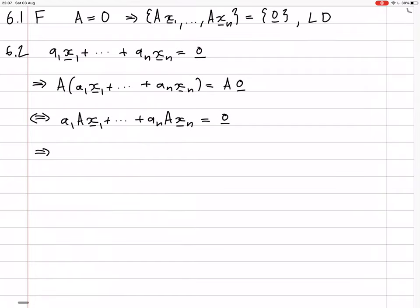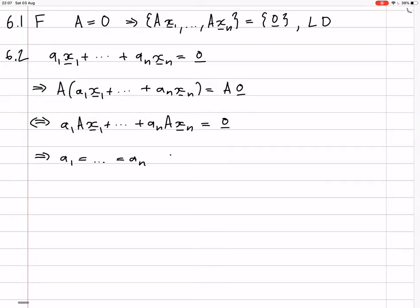and that implies that the scalars are all zero because that set is... because Ax₁ to Axₙ is literally independent. So this whole thing proves that this other set without the A's is literally independent.